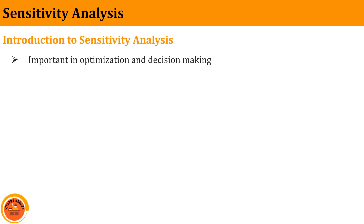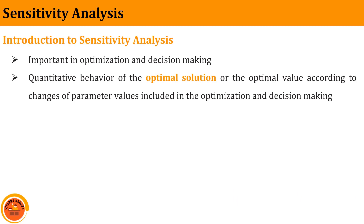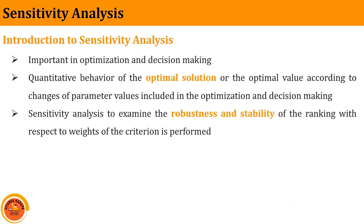Coming to why we have to apply sensitivity analysis: it is one of the most important aspects in optimization as well as in decision making. When the decision maker is trying to find the optimal solution, the optimal value has to vary according to changes in the parameters. Depending upon changes in input parameters, the optimization and decision making outcome changes. This sensitivity analysis is especially used to examine the robustness and stability of the ranking — to what level our ranking is correct with respect to weights. In this video I will particularly focus on how weightages of criteria impact the multi-criteria decision making problem.